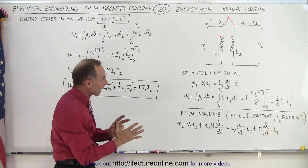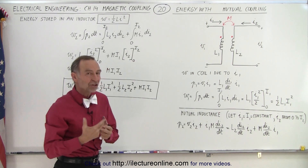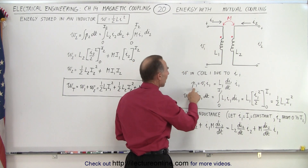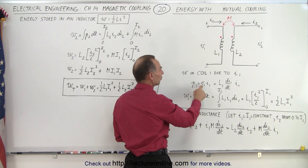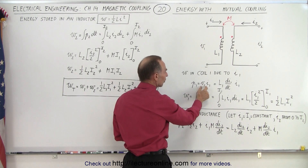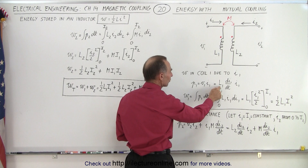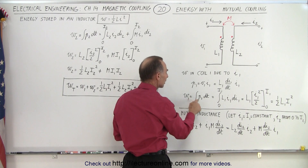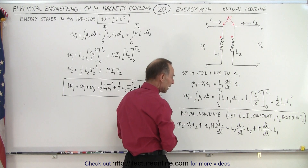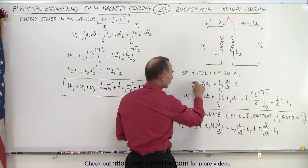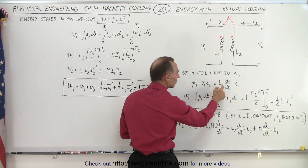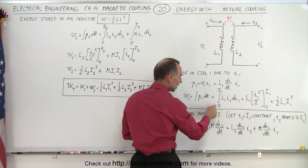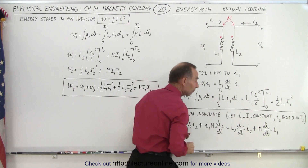Now let's first look at coil 1 and see what the energy content is in coil 1 only due to the current I1. We know that power is always equal to the product of the voltage and the current, and the voltage across an inductor is the inductance times di/dt. To find the work we simply integrate the power over time. If we bring dt over, then P1·dt equals L1·i·di, and we integrate from the current being 0 to the maximum value of i1.